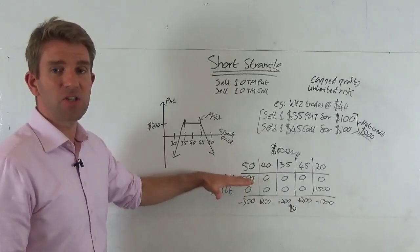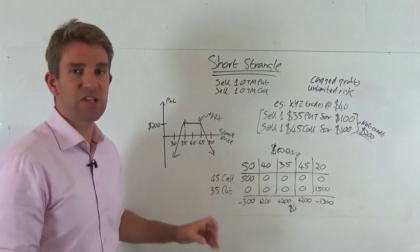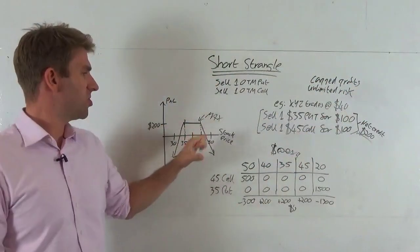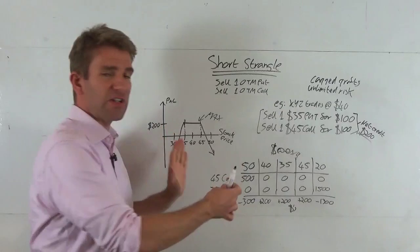Okay guys, so that's the short strangle. We've got capped profits as we can see here at $200. Unlimited risk but we've got a pretty decent range, we've got ten dollar range, five dollars either side of that $40. Ten dollar range, if it sits in that we make the money.